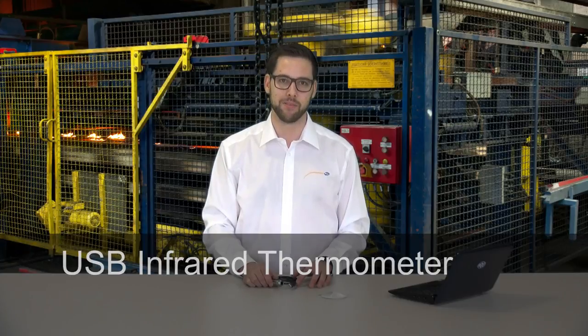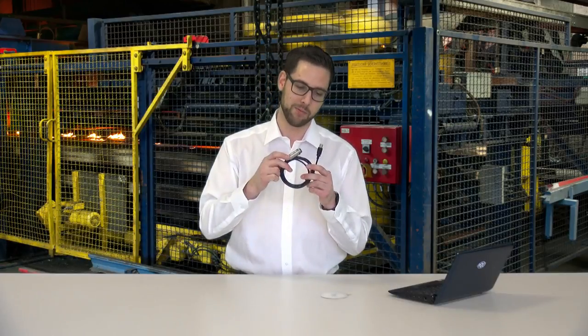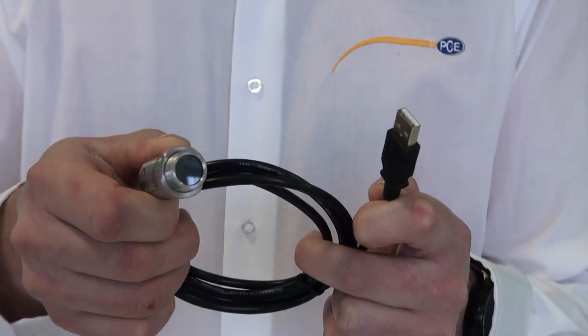The PC IR-51 is a USB infrared thermometer which stands out through its small construction. The thermometer has a measuring area from minus 20 up to 1000 degrees Celsius. The accuracy is 1% of the measured value.